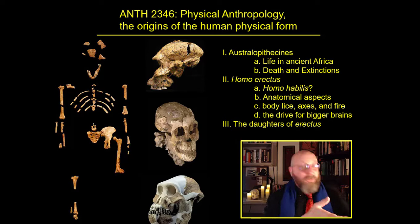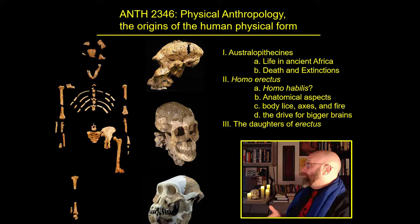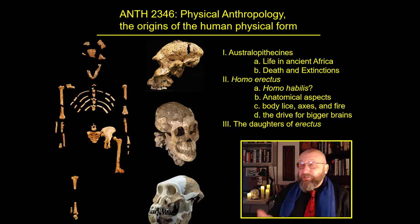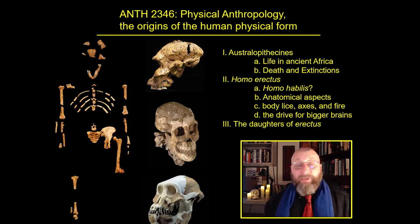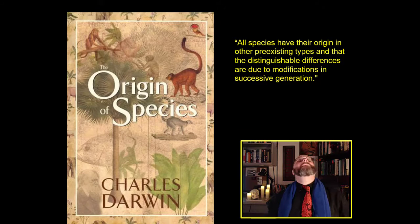Over the last 70 or 80 years or so, physical anthropologists, biologists, and paleontologists have all worked out a pretty decent understanding of where we as a species come from — about the origins of the human physical form and the evolution of humans. This was actually worked out way back in 1859 with Charles Darwin's Origin of Species. And this is what Charles Darwin says about the origin of species.